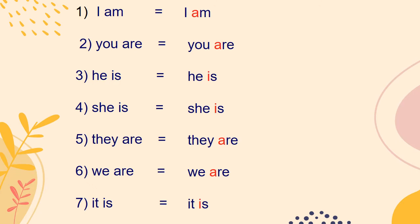Now let's see how contractions are formed. First: 'I am.' The first letter of the second word is highlighted. We remove that letter and add an apostrophe. Remember, after adding the apostrophe, we write the two words as one word.